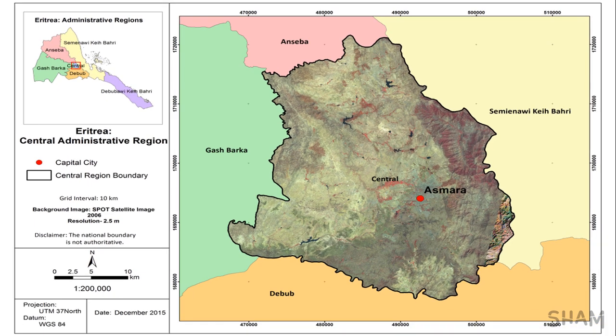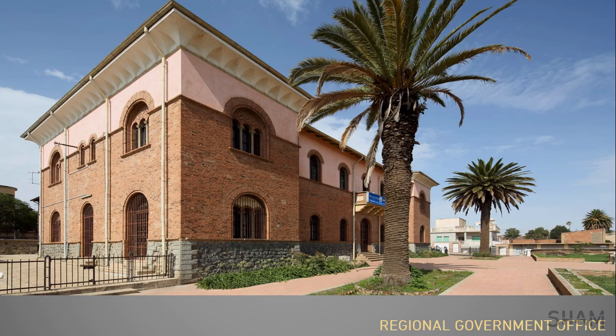Between 1890 and 1941, Eritrea was an Italian colony. Some of the many modernist futuristic buildings in Asmara realized during that time include the regional government office, known by its original name Comasarata del Hamasen, designed by Paolo Revellio, who was an administrator of Masao during Italian colonization. I'm showing these stunning buildings of Asmara in no particular order.